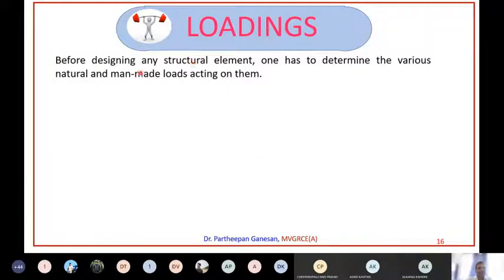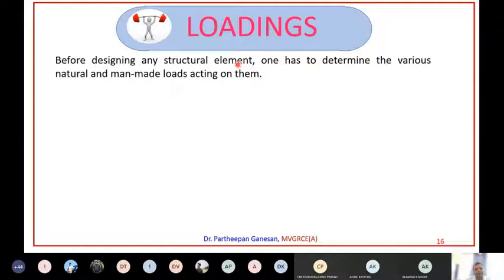Before designing any structural element, we are not designing a whole structure at once. We always design element by element. The elements consist of footing, columns, beams, and slab. When you assemble all these things together, you get a structure. But a structure as a whole is not designed - you always design a structure as individual structural elements.